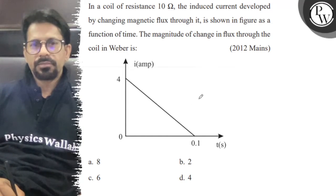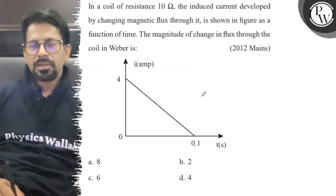Hello, let's see the question. In a coil of resistance 10 ohm, the induced current developed by changing magnetic flux through it is shown in the figure. The magnitude of the change in flux.